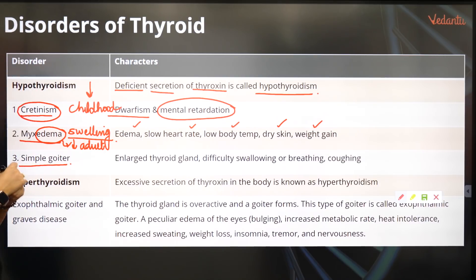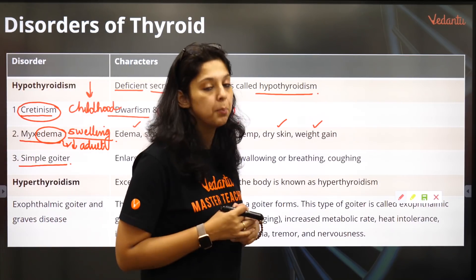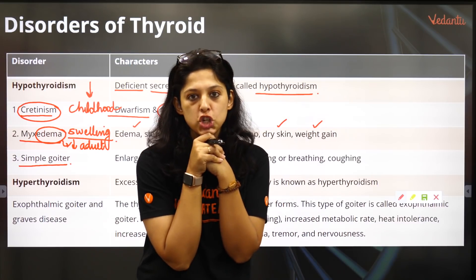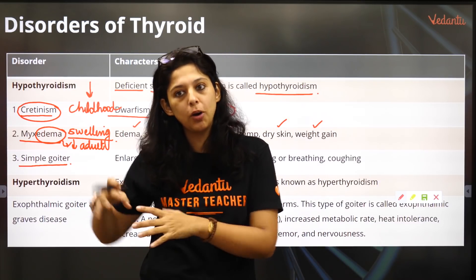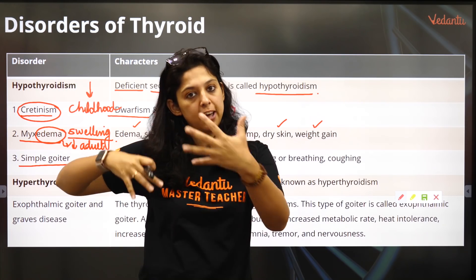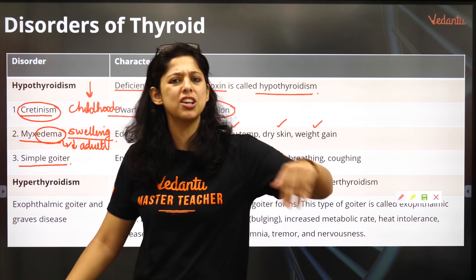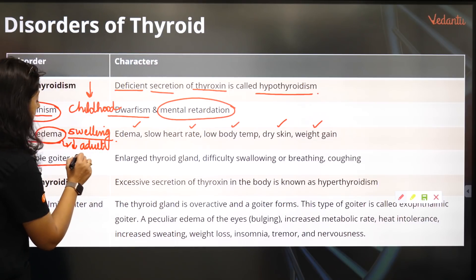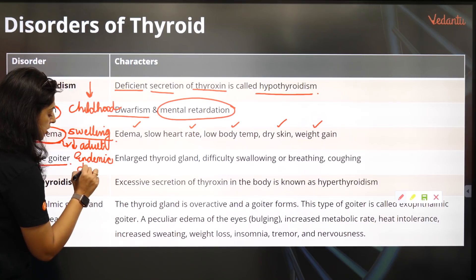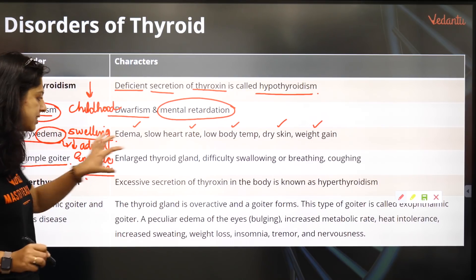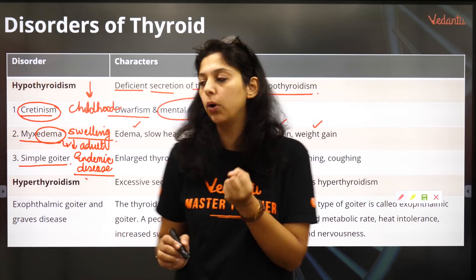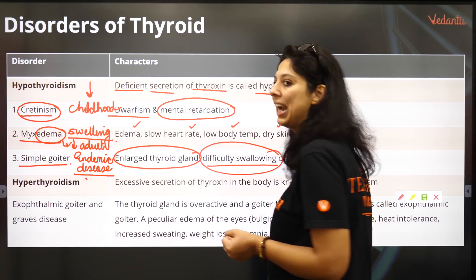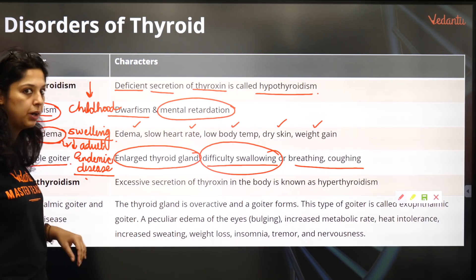Let's come to simple goiter. Simple goiter happens in people who live in the hills. Because all rivers take origin from the hills, the vital salts are carried down to the plains in silt form, so hilly regions lose those vital salts. Therefore salt consumption should be more in the hills, though today this is less relevant because the artificial salt available is iodized. Goiter was an endemic disease of the hills — it is an enlarged thyroid gland causing difficulty in swallowing, breathing, and even coughing.